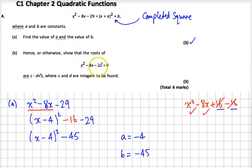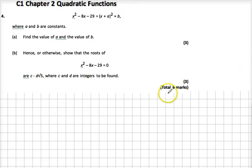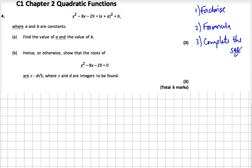Hence, show that the roots of this when it's equal to 0 are that and that. Okay. So, remember, three methods of solution. We can factorize, we can use the formula, or we can complete the square.